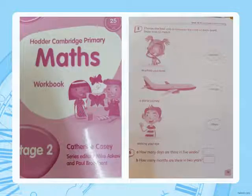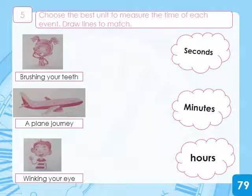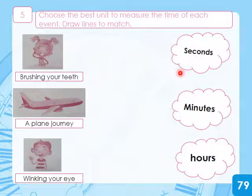Now, take out your math workbook. Open page 79. Let's do exercises. Ready? Yes! Exercise 5: Choose the best unit to measure the time of each event. Draw lines to match. We have these pictures and we will match them to their times.